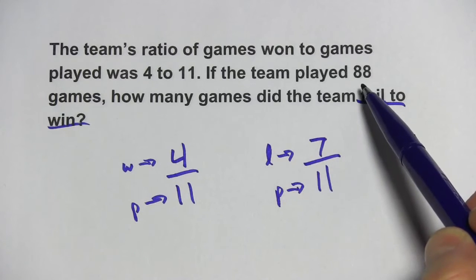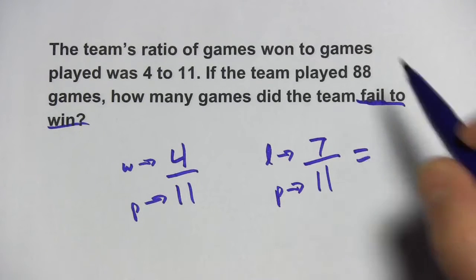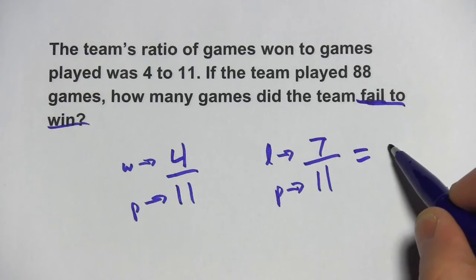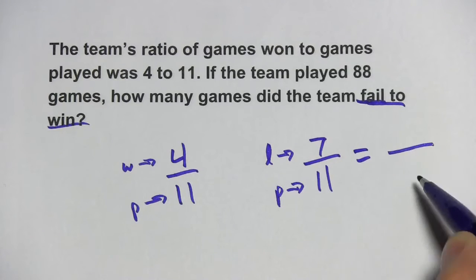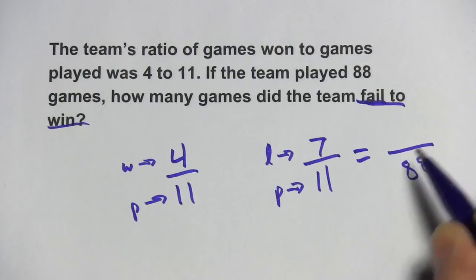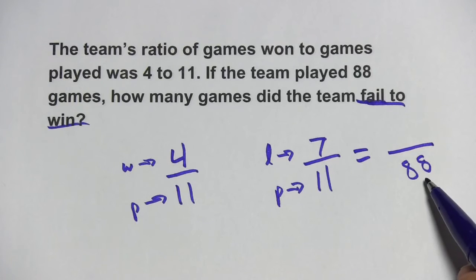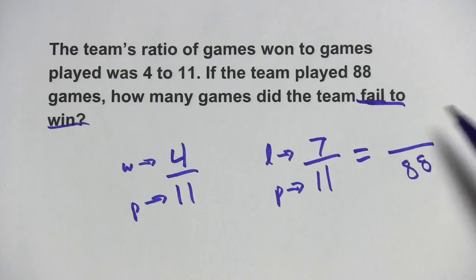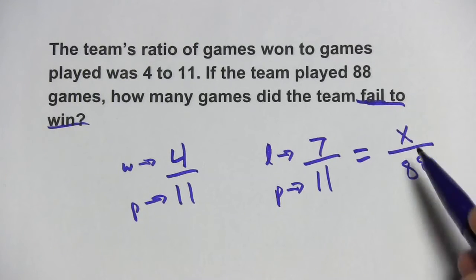Now it says the team played 88 games. So I'm going to set up another ratio here and we'll have a proportion. The total games played is 88, that's on the bottom here, so I put it on the bottom here. The total games they lost, well, I don't know, so I'm going to put an x in there.